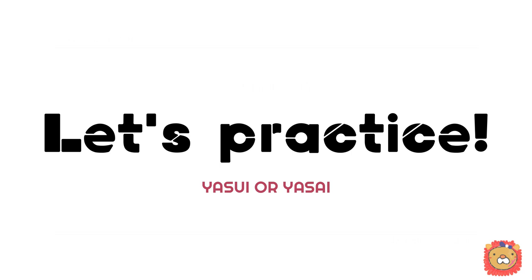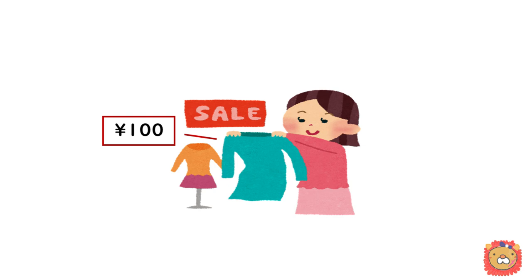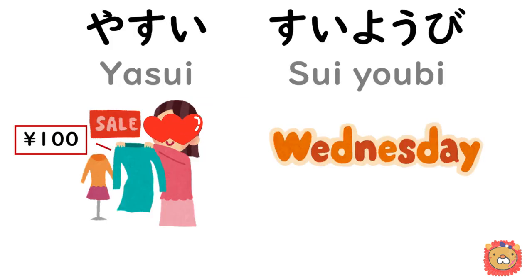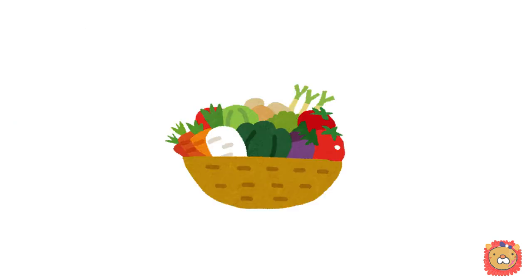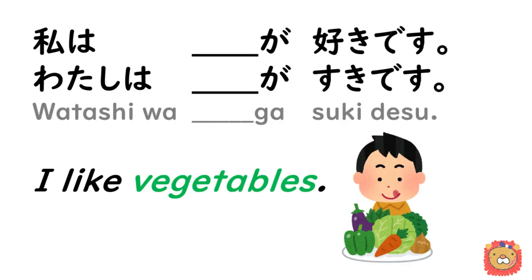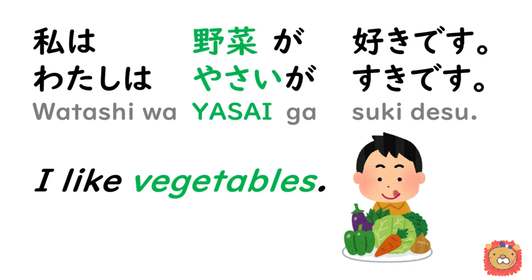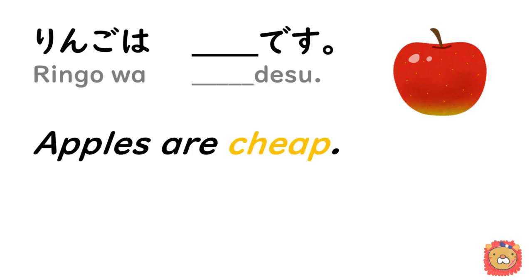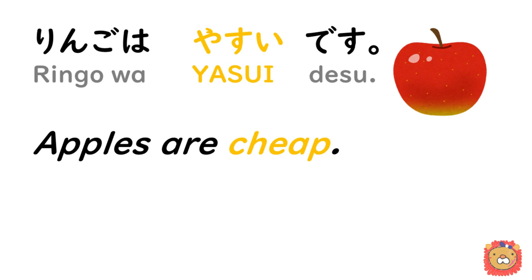Now, here are some small practices. Let's check this out. 野菜サイバーアタック — リンゴは 安いです.